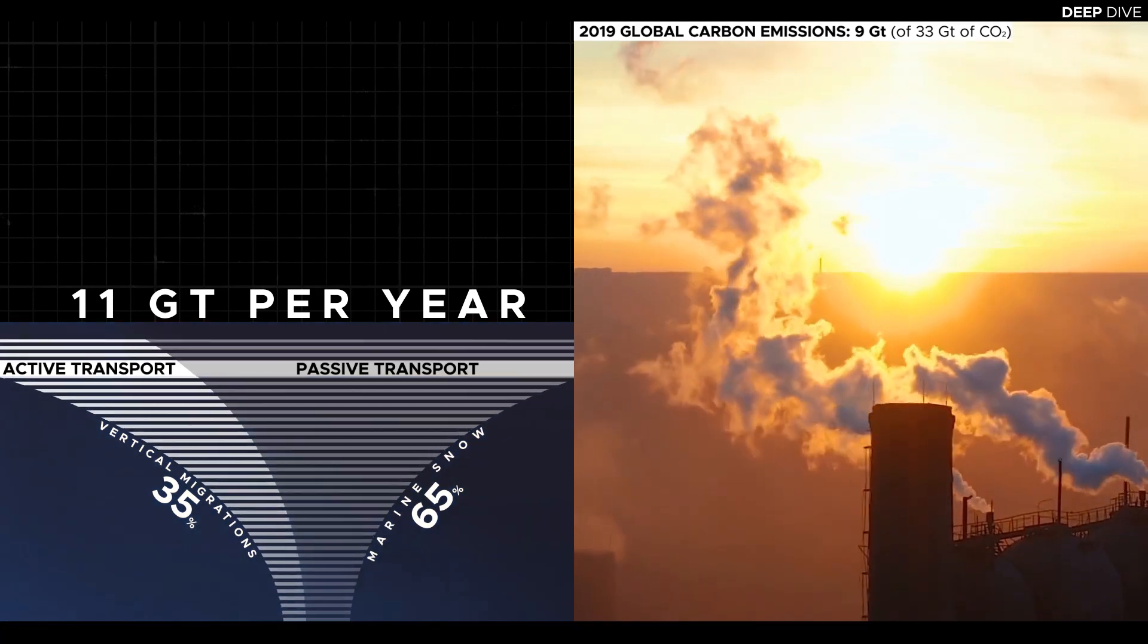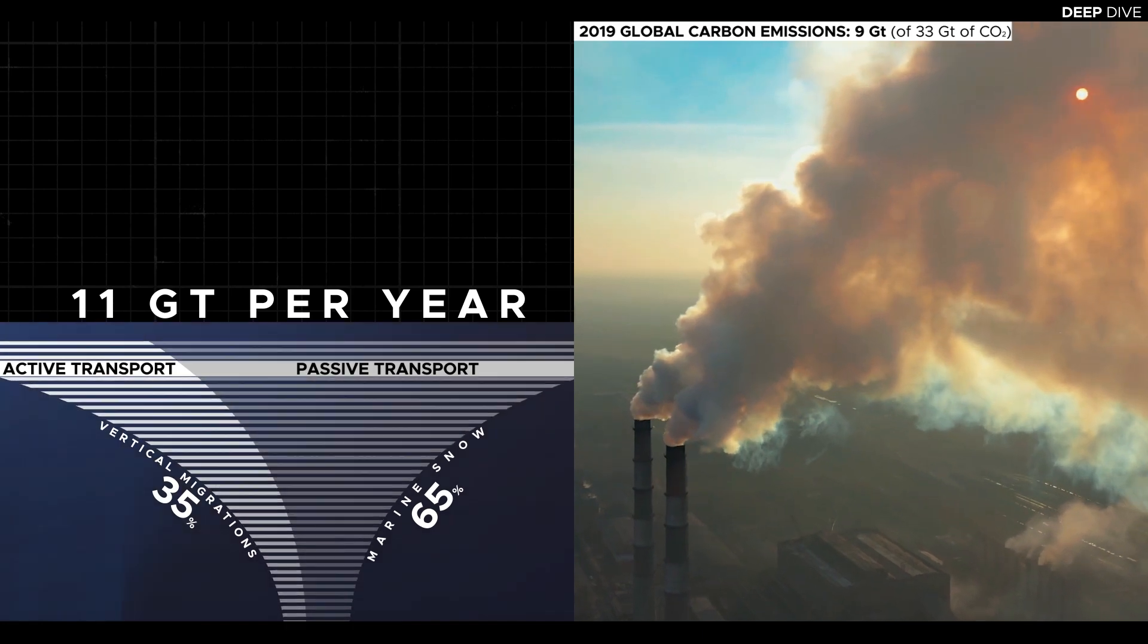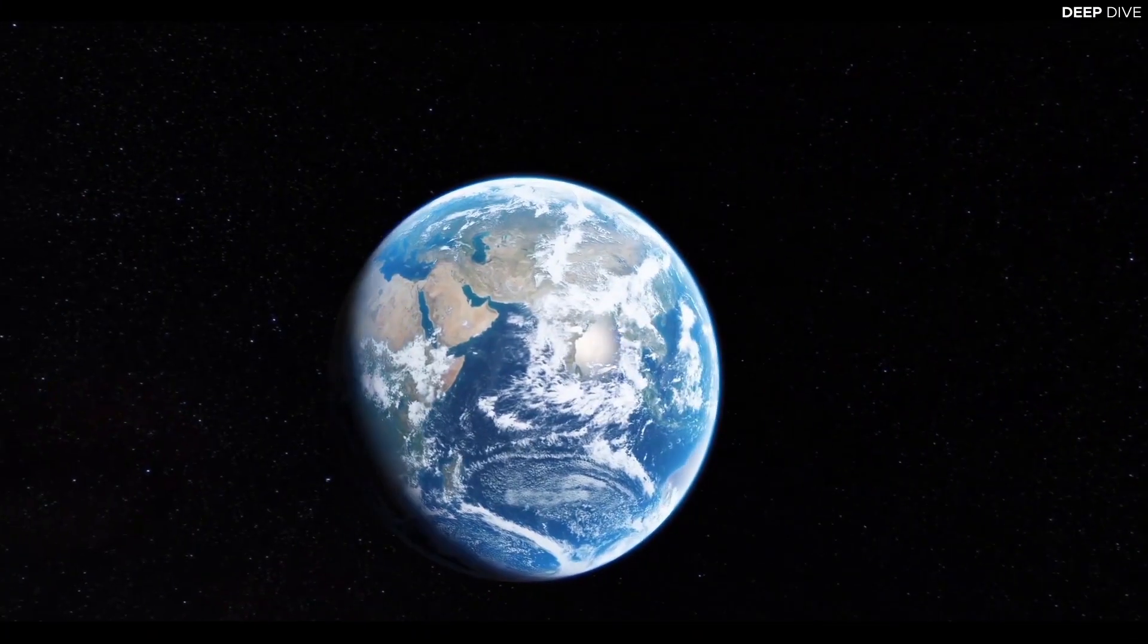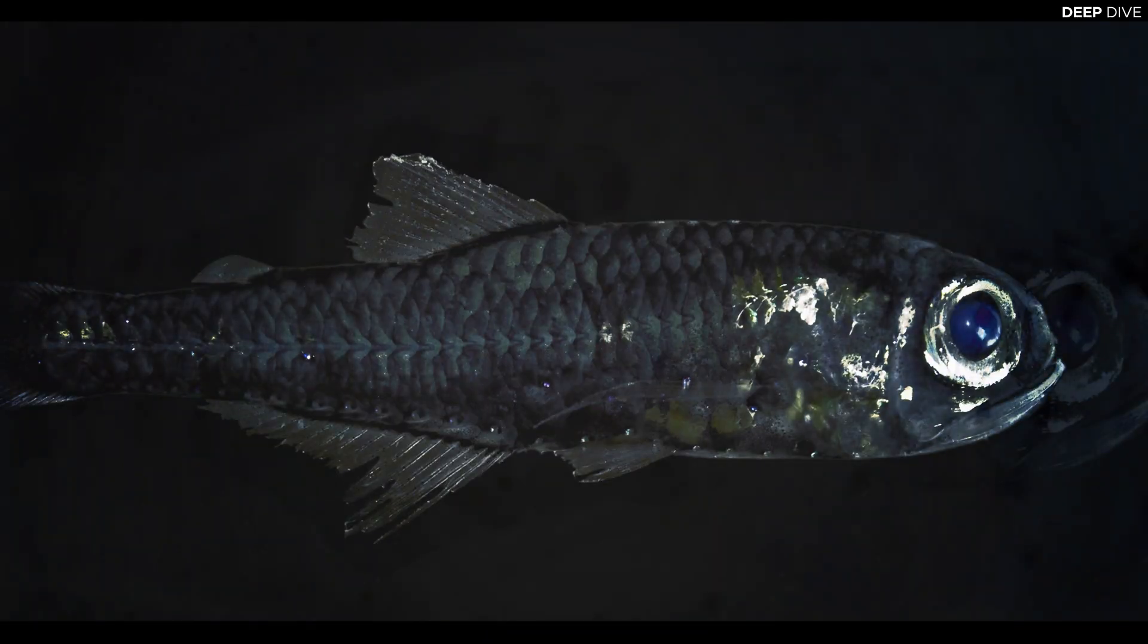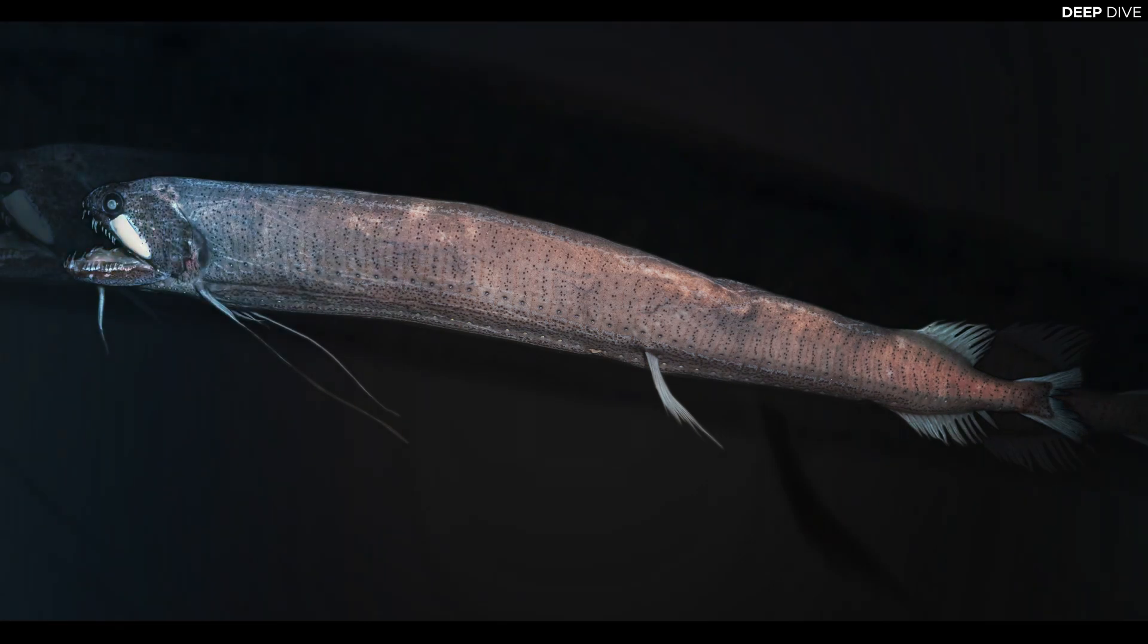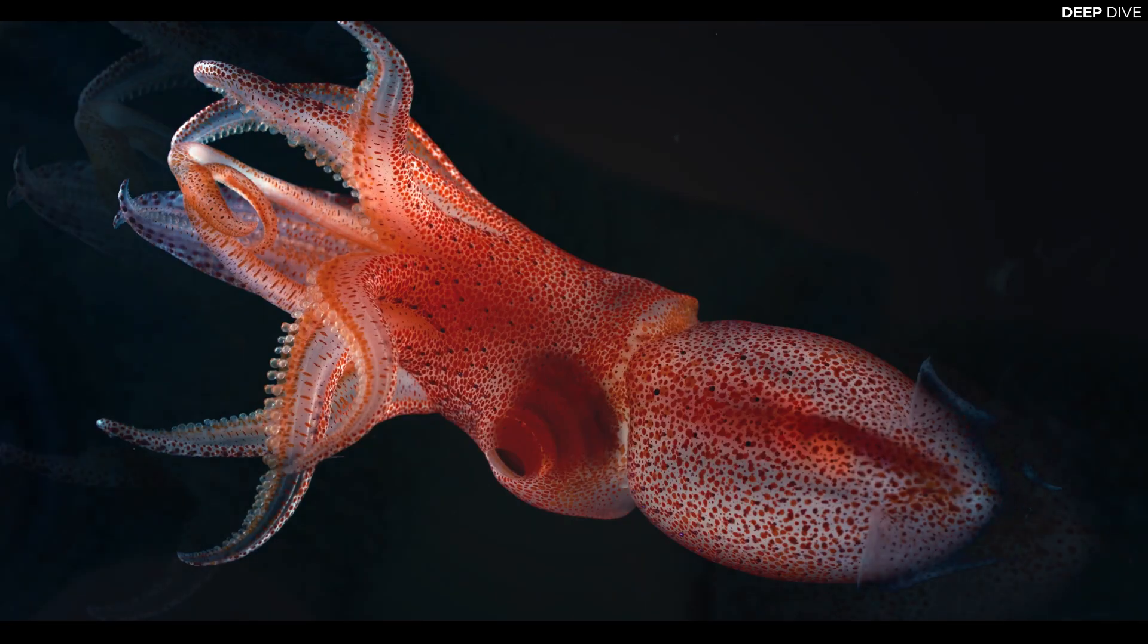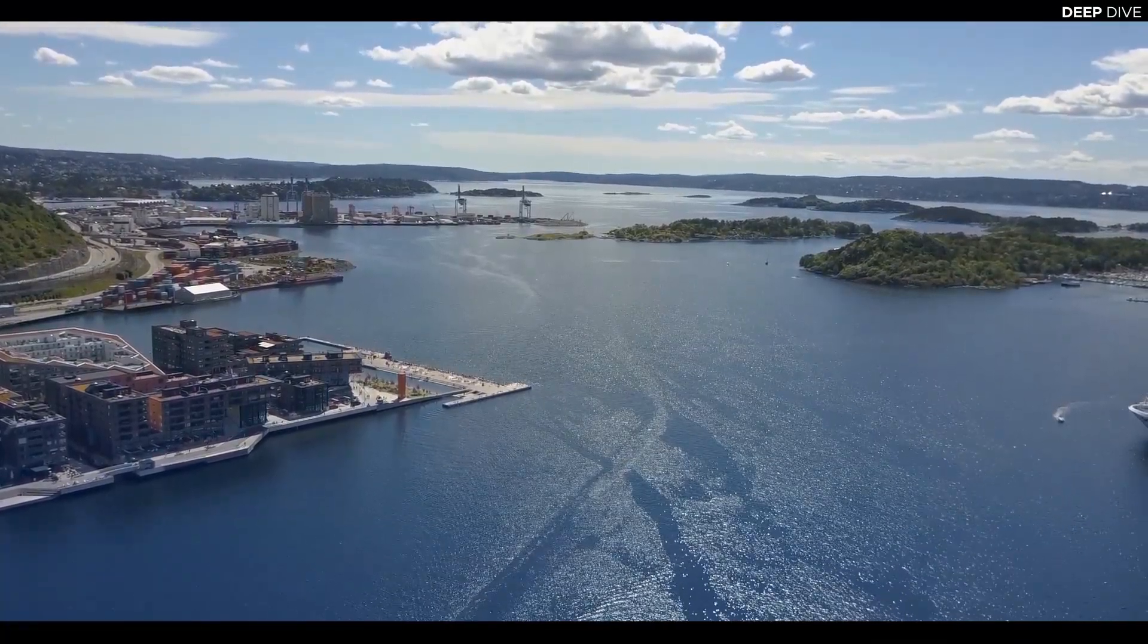Of course, all these numbers are only very rough estimates, but they showcase why we need to study this part of the ocean. It is an important gear in the global carbon cycle that is entirely driven by a community of animals that we still know very little about. It is probably the most understudied part of the carbon cycle simply because of how difficult it is to study. And this lack of knowledge could become very detrimental in the future.